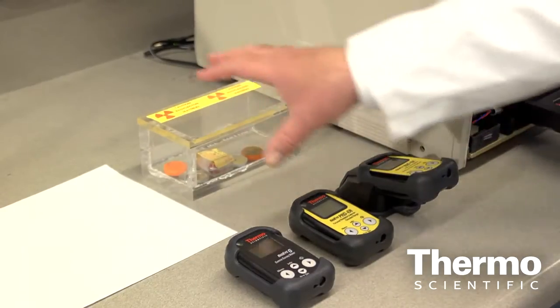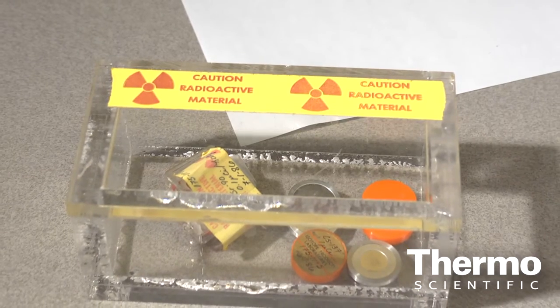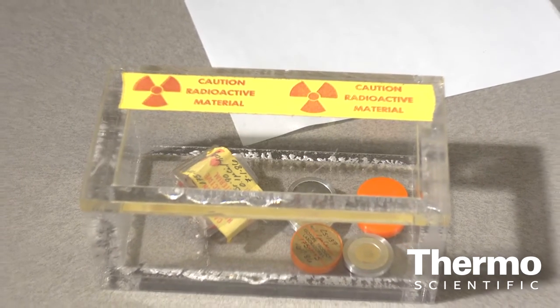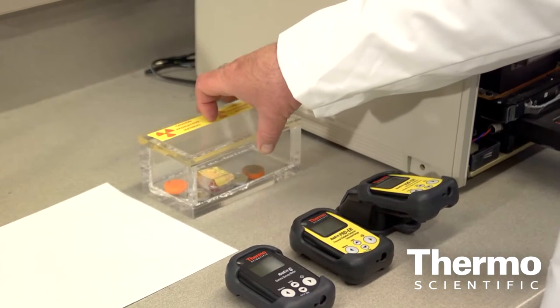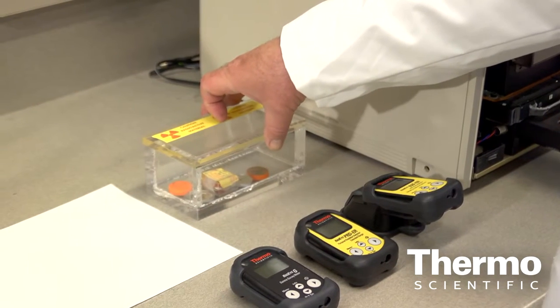Well, there are different types of detectors for different types of radiation, and what I have here, I have this box, and I have a few sources which are actually the same type of radiation or radioactive sources that are emitted when a nuclear incident happens, like the one in Japan.